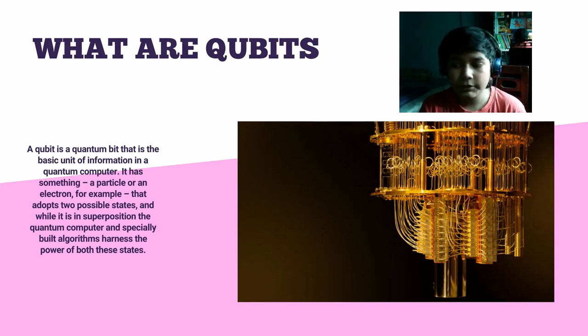In quantum mechanics it's different. In quantum mechanics we use qubits. A qubit is a quantum bit that is the basic unit of information in a quantum computer.